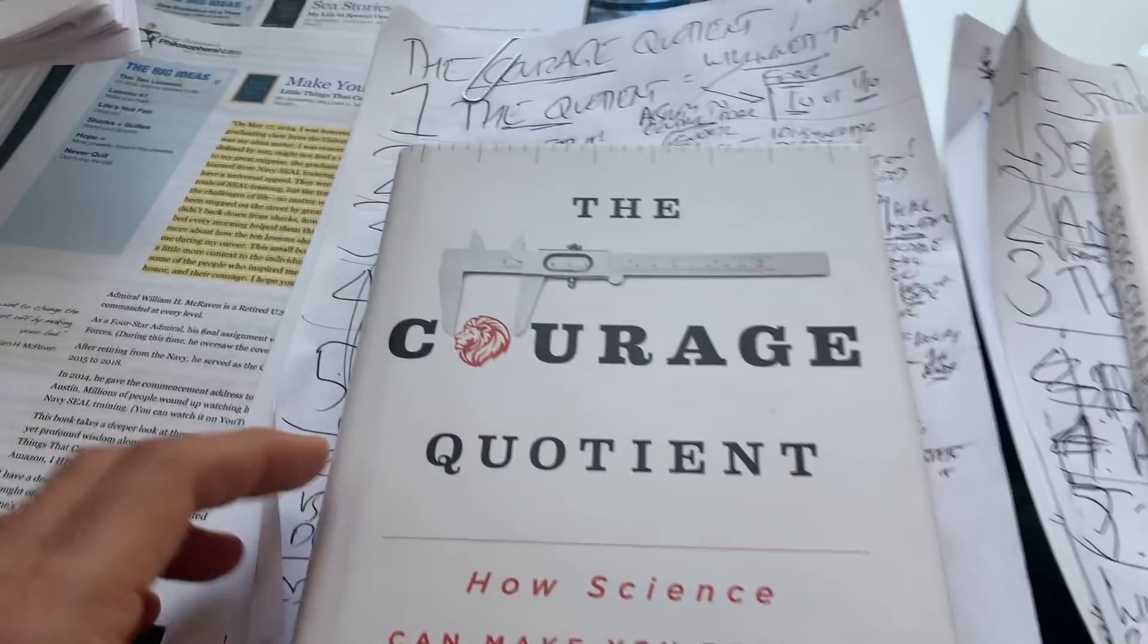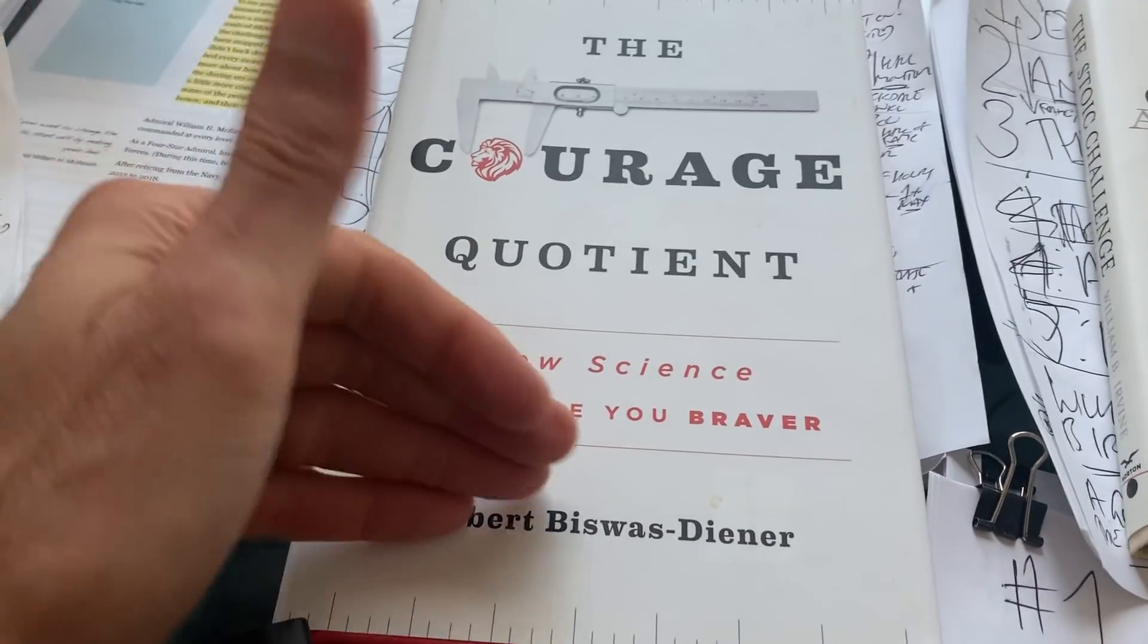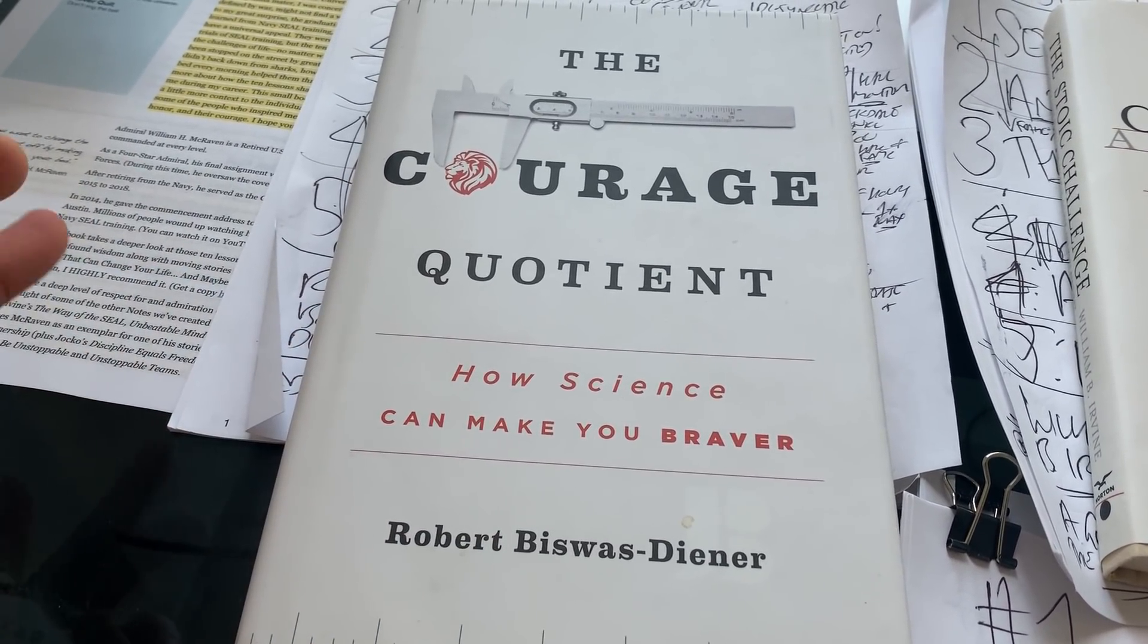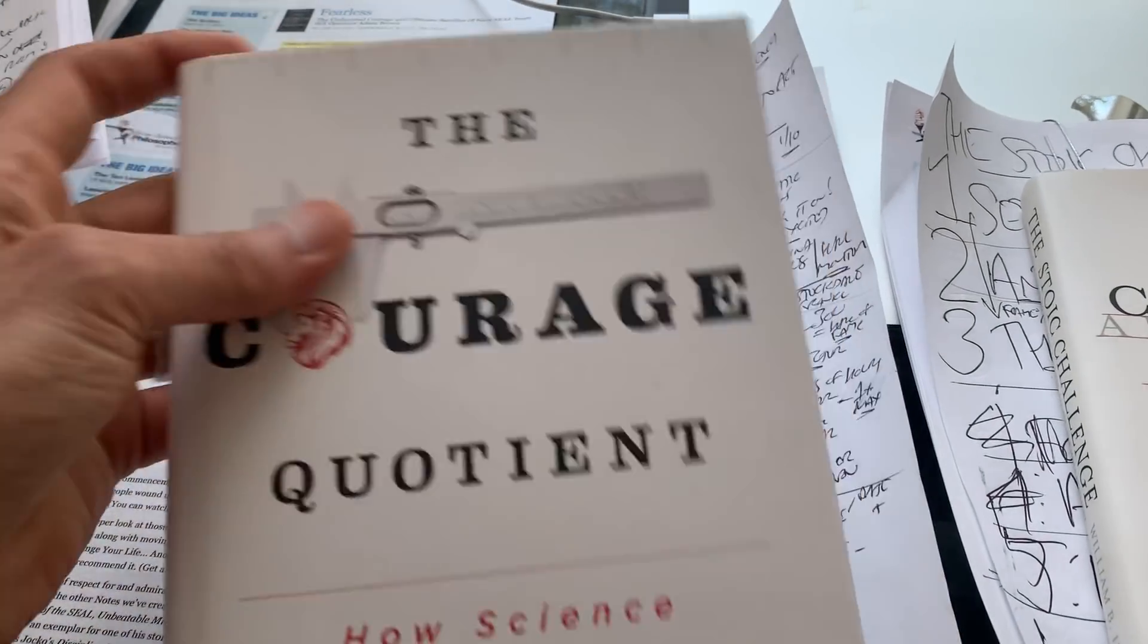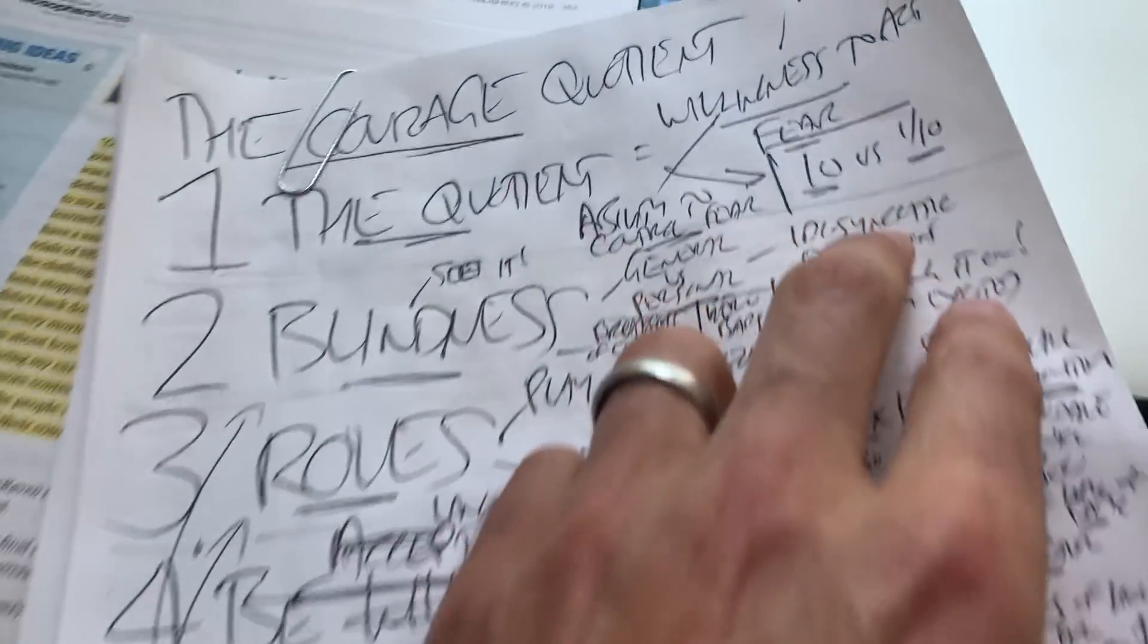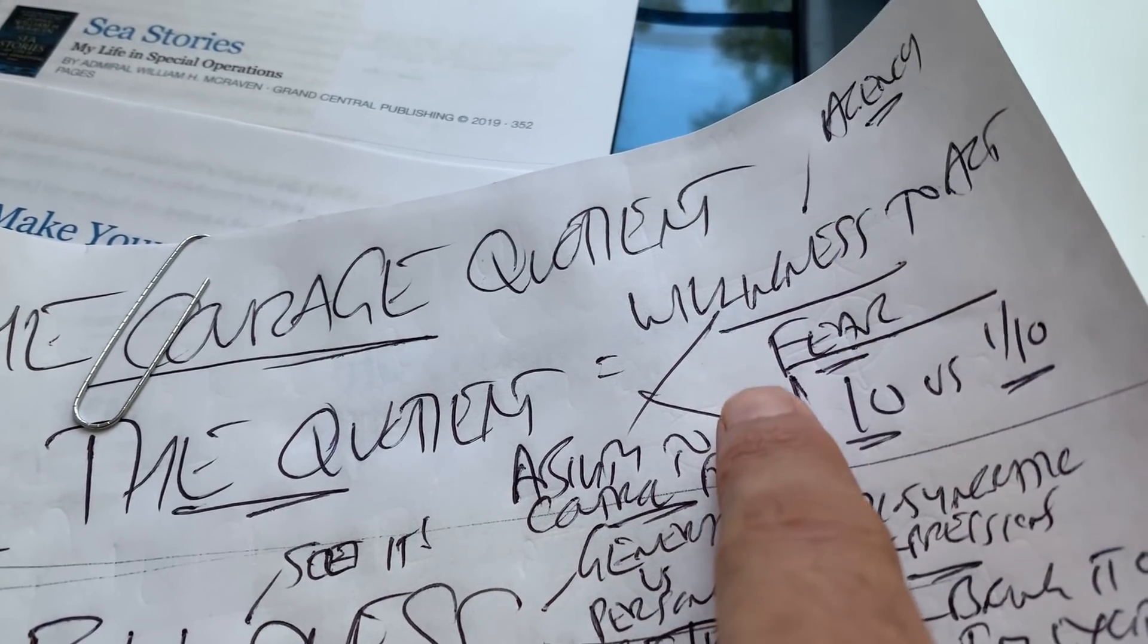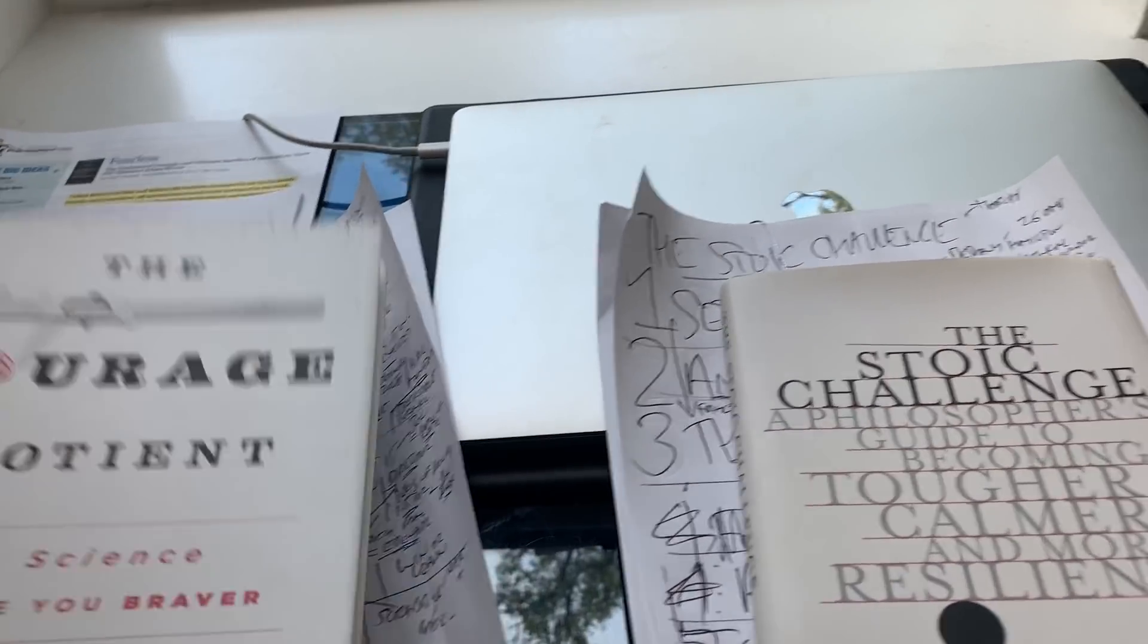Then I did The Courage Quotient, the science of courage. Robert Biswas-Diener, he also happens to be a luminary, a guest faculty member of our Optimized Coach program. Super powerful stuff. The science of getting your courage on. Basically, there's a quotient. Your willingness to act in the presence of fear and your ability to control fear. I walk through, we'll save that for the PNTV. But that was fun.